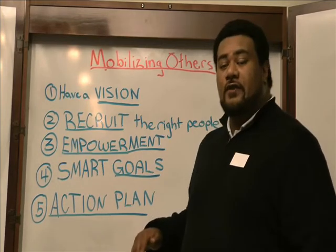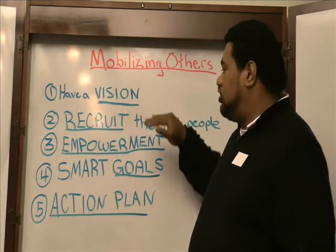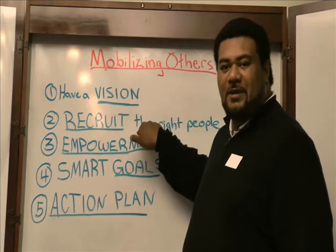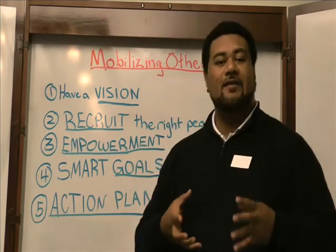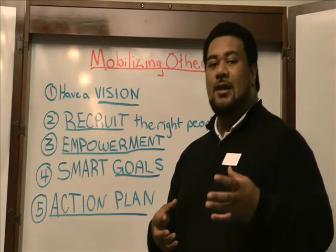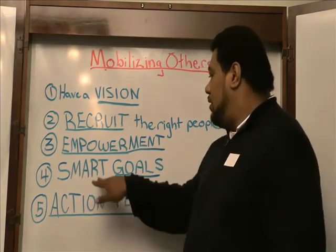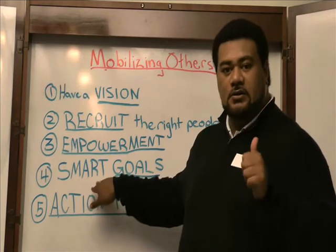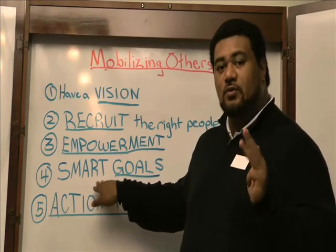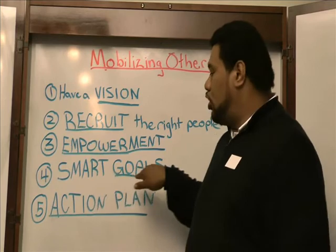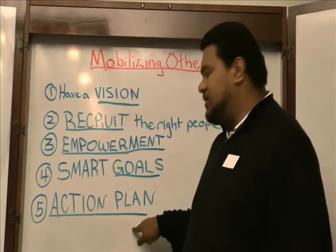So just a quick review. One: have a vision. Two: recruit the right people. Three: empowerment — giving others ownership and allowing them to utilize their strengths. Four: SMART goals — specific, measurable, attainable, realistic, and time. And the last step: an action plan.